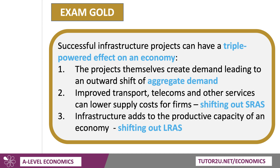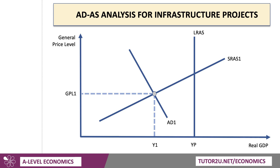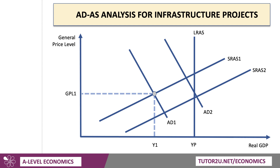If you're talking about infrastructure in an exam in a macro paper, you've got a great opportunity to build a developed diagram. Using a neoclassical ADAS diagram: initially we're in equilibrium at GPL1 and Y1. Infrastructure causes demand to increase, so AD1 shifts to AD2. There could be a further multiplier effect shifting AD out even further. Infrastructure also shifts out aggregate supply in the short term because it lowers costs.